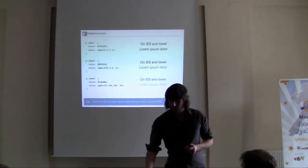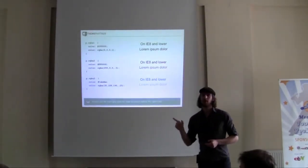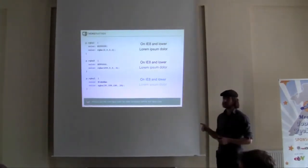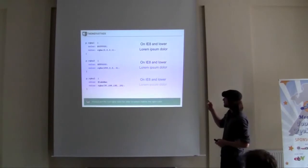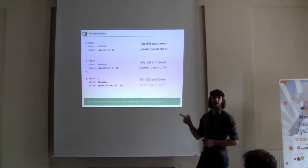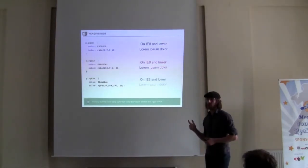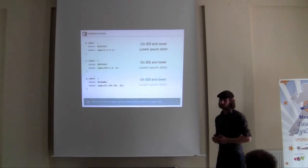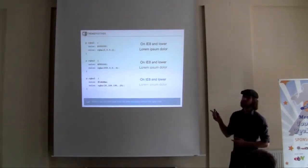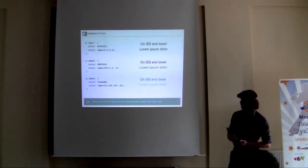I'm going to start with RGBA, because I'll use it in my other examples as well. You can use RGBA from Mozilla 3.0, all Chrome versions, Safari 3.0, Opera, Internet Explorer 9, and Mobile Safari. It works on colors, borders, and backgrounds. We're going to start with color first.